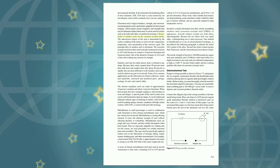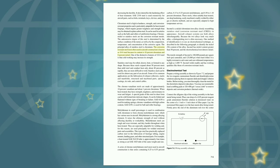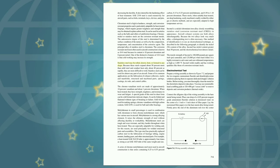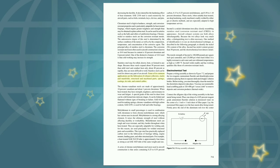Chrome-nickel or stainless steels are the corrosion-resistant metals. The anti-corrosive degree of this steel is determined by the surface condition of the metal, as well as by the composition, temperature, and concentration of the corrosive agent. The principal alloy of stainless steel is chromium. The corrosion-resistant steel most often used in aircraft construction is known as 18-8 steel, because its content is 18% chromium and 8% nickel. One distinctive feature of 18-8 steel is that cold working may increase its strength. Stainless steel may be rolled, drawn, bent, or formed to any shape. Because these steels expand about 50% more than mild steel and conduct heat only about 40% as rapidly, they are more difficult to weld. Common applications include exhaust collectors, stacks and manifolds, structural and machine parts, springs, castings, tie rods, and control cables.